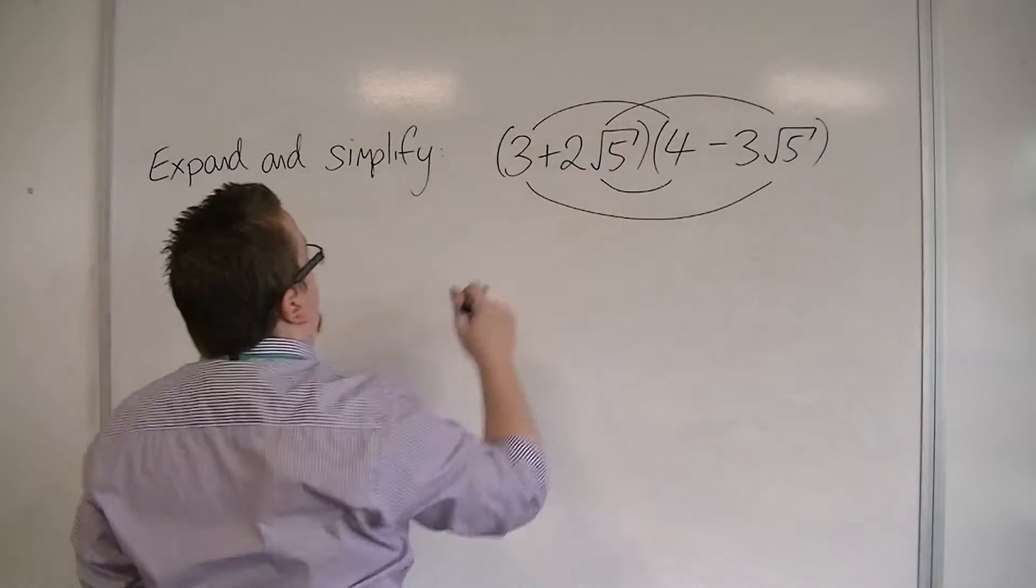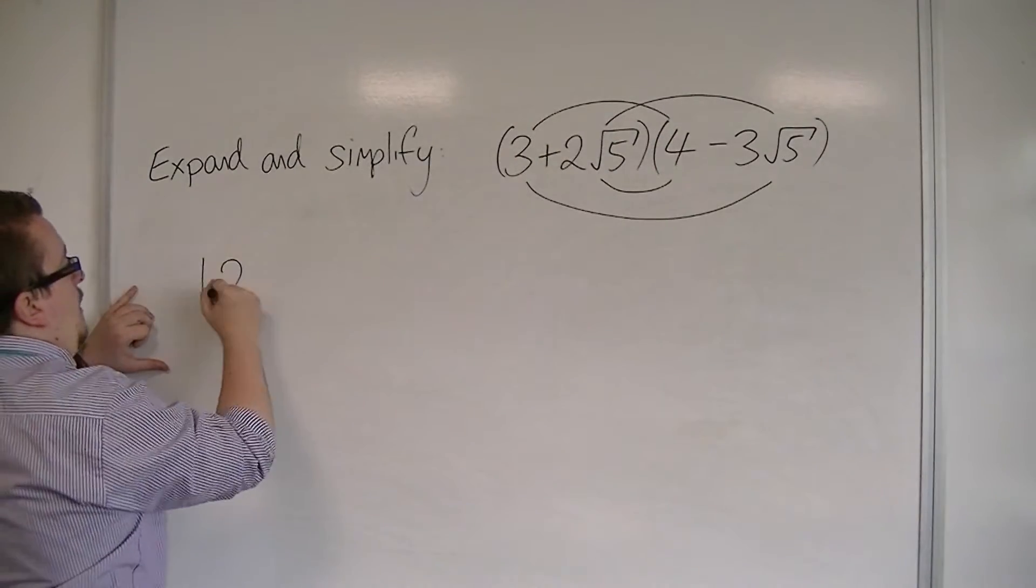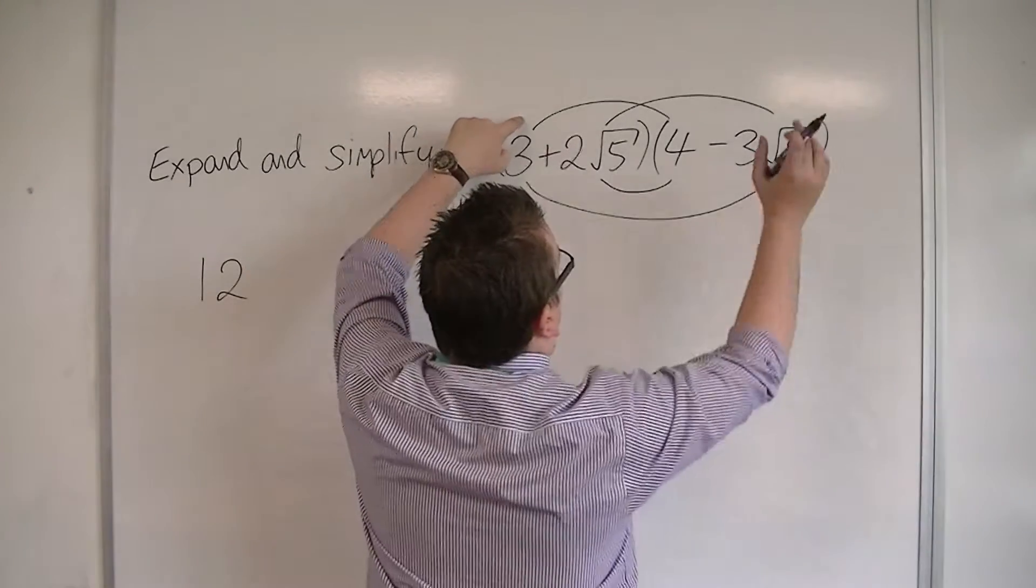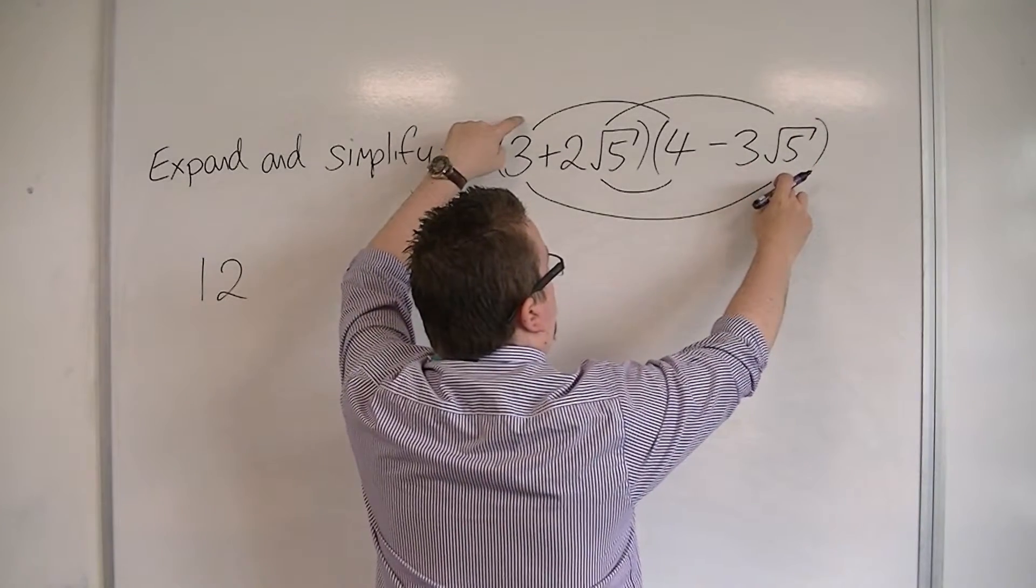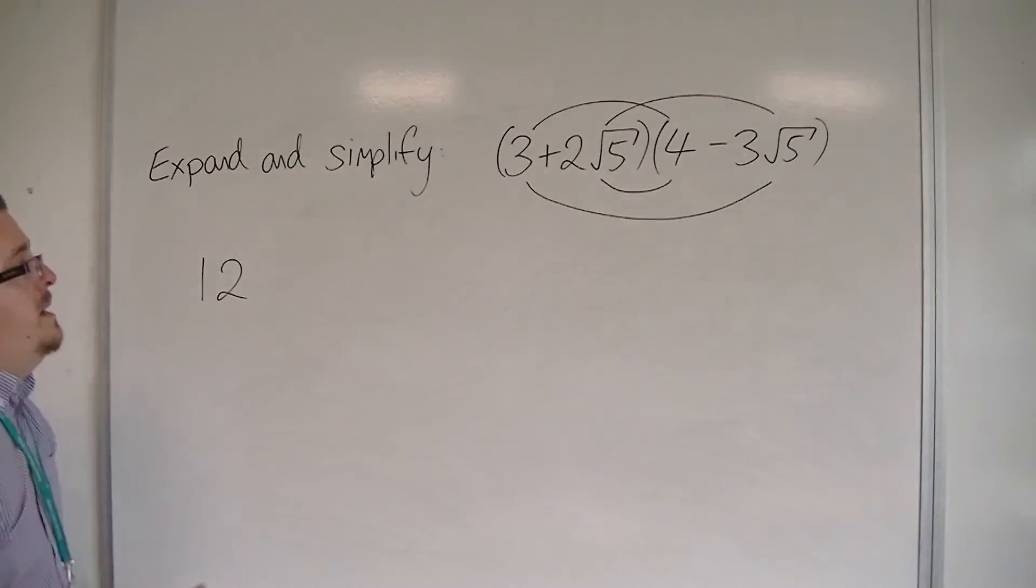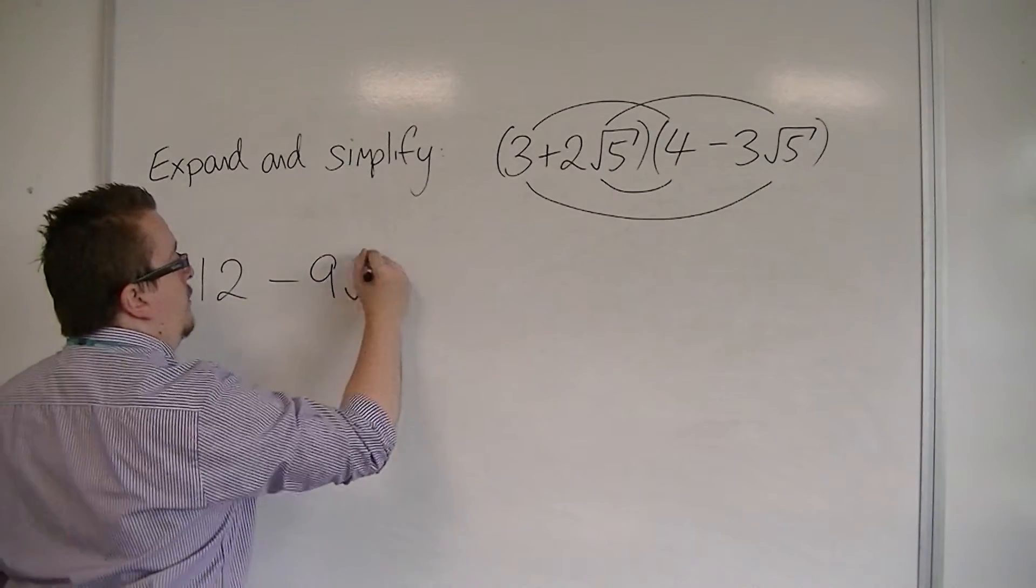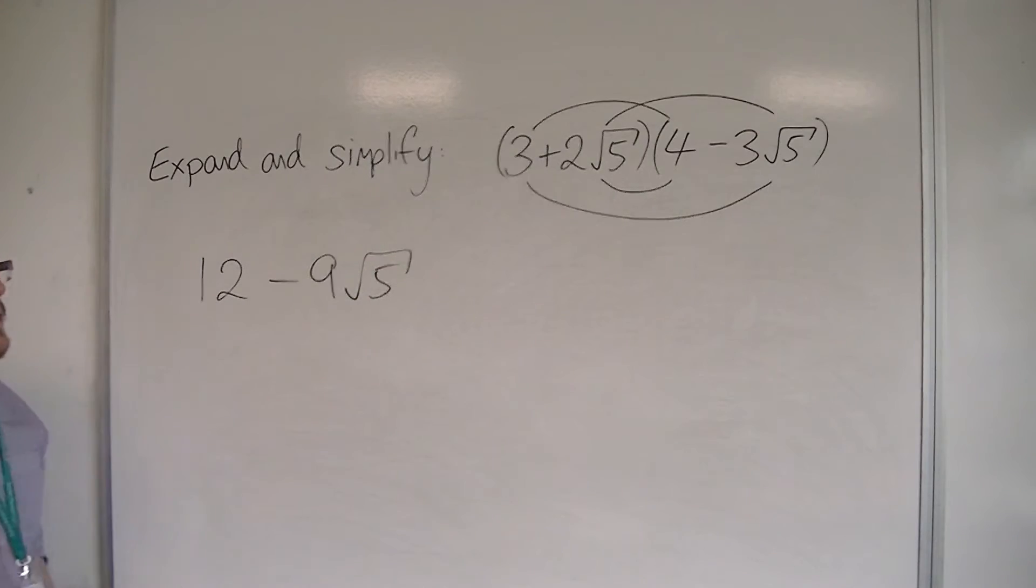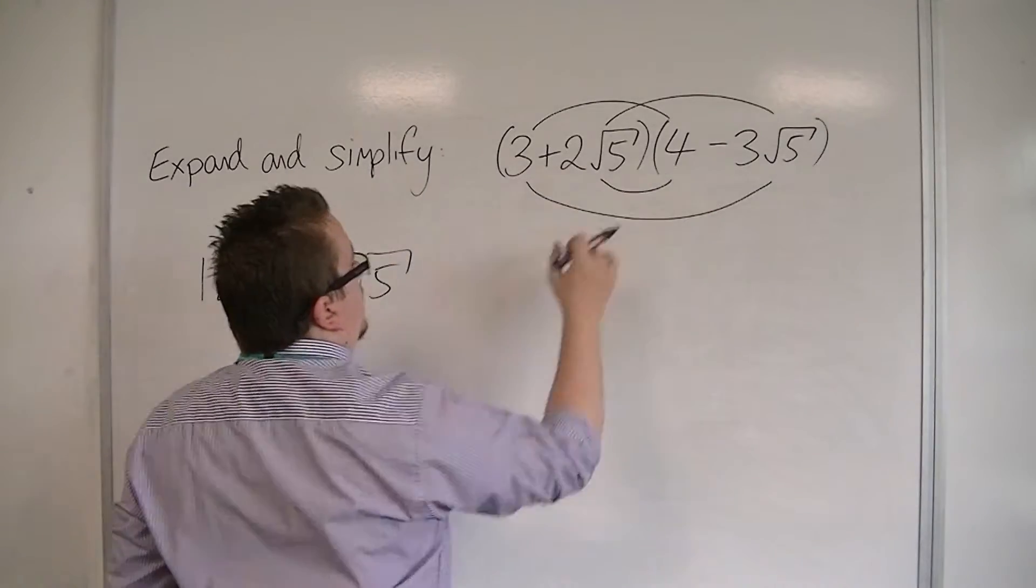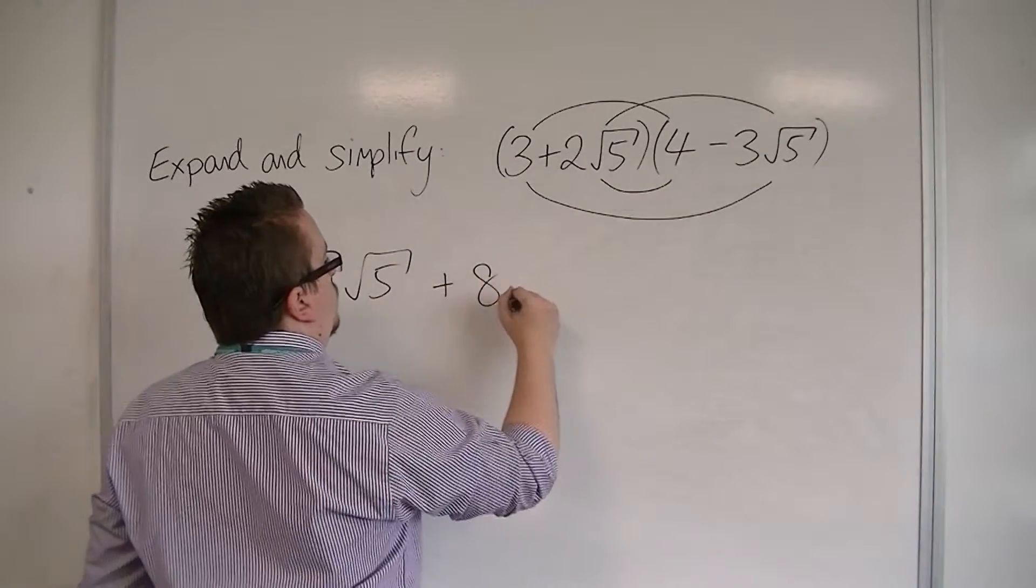Let's start with the 3 times 4. We've got 3 times 4, which we know is 12. We've then got 3 times minus 3 root 5, which would be minus 9 root 5. The 3 times 3 makes the 9. Then we've got 2 root 5 times the 4, which would make 8 root 5.